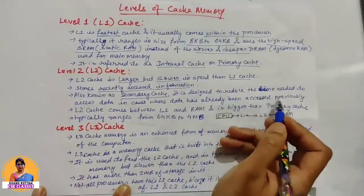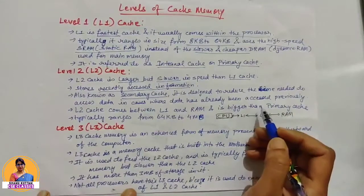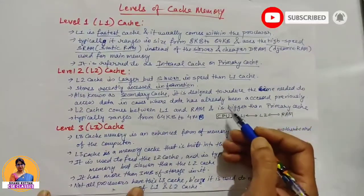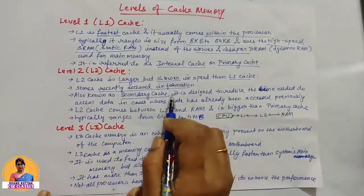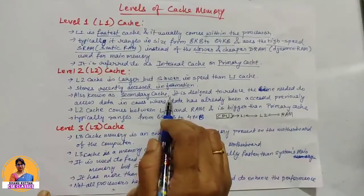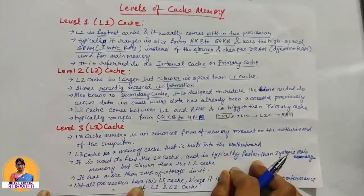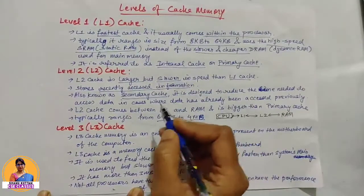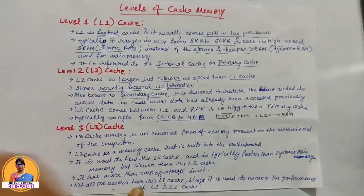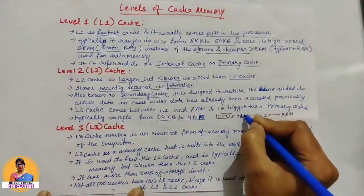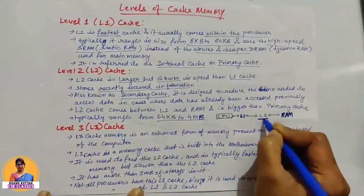L2 cache is designed to reduce the time needed to access data in cases where that data has already been accessed previously. We keep that data in secondary cache so that next time it can be accessed from there. Its size is basically 64KB to 4MB. L2 cache sits between L1 cache and RAM.